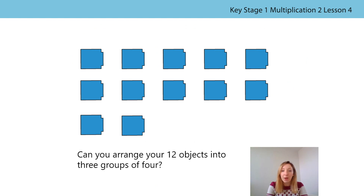Now I'd like you to press pause on the video and either go and get 12 of the same objects or draw 12 of the same objects. We learnt last lesson that the size and the colour doesn't matter so long as the object is the same. So you could get 12 coloured pencils, 12 pieces of pasta, or 12 bricks. If you're getting 12 objects, you will also need three plates. I would like you to see if you can arrange your 12 objects into three groups of four.